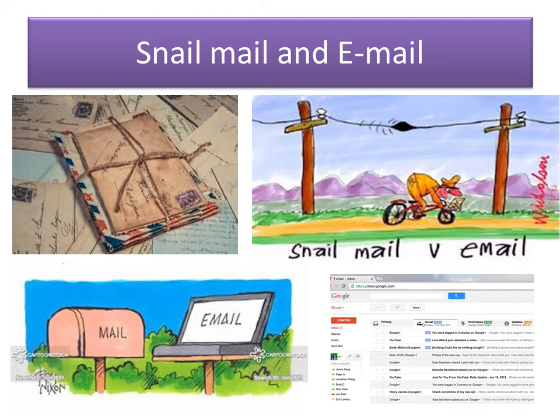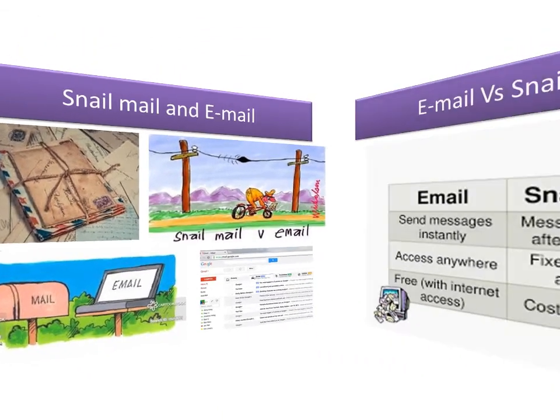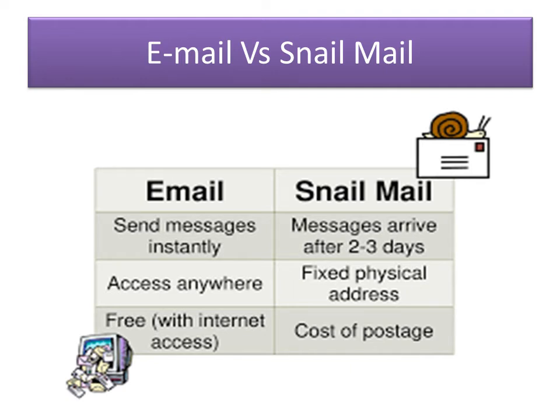Snail mail and email differ completely in how they operate. Email has a simple address, whereas snail mail has a complicated address with a pin code. Email messages are sent and received instantly, while traditional mail arrives after two or three days. With email you can attach videos, audio, pictures, or big files, whereas snail mail can only carry printed copies. Cost-wise, email is free with internet access, while snail mail is chargeable for postage.